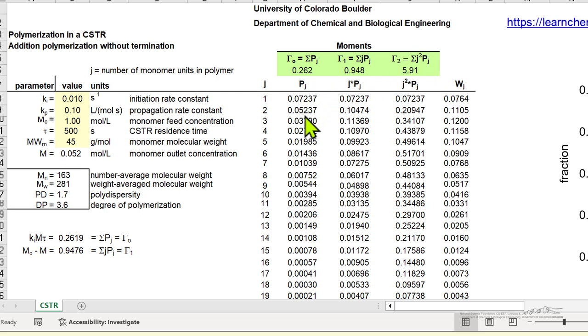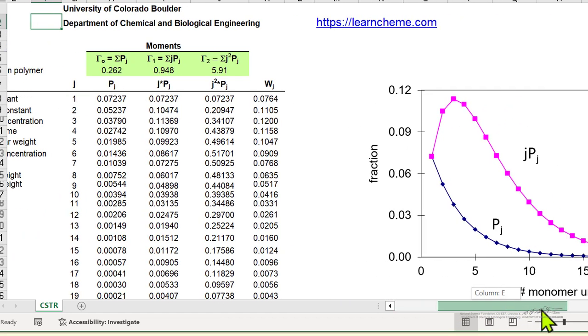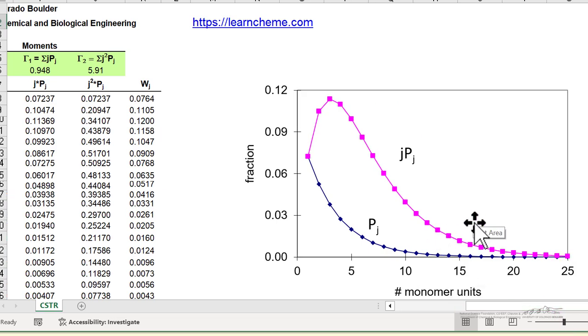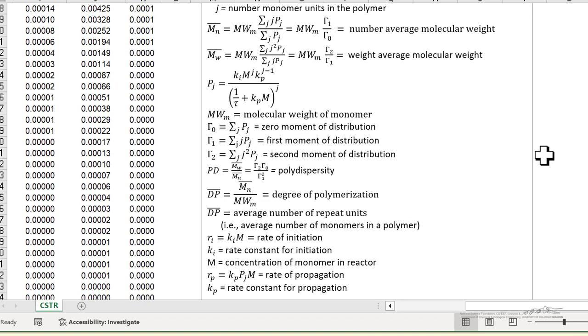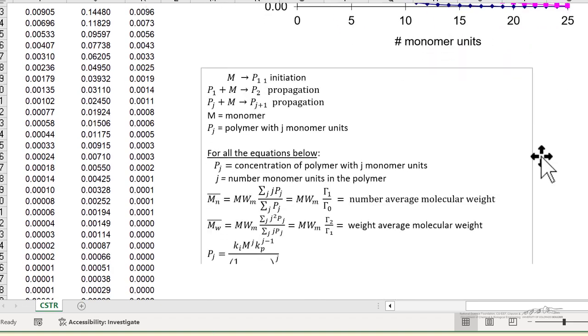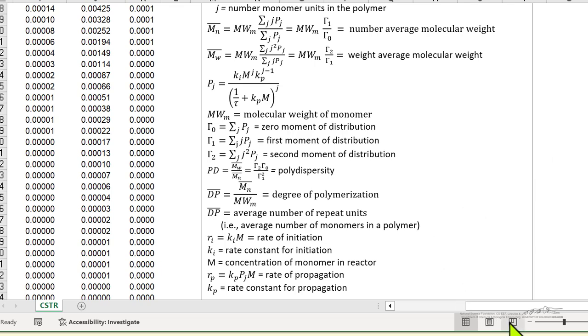The individual polymer concentrations are listed here, along with j P sub j. The spreadsheet also generates a plot of the fraction versus monomer units and contains all of the equations used in generating the spreadsheet.